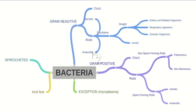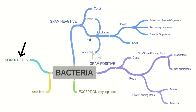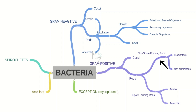Before getting into the detail of Bacillus anthracis, let me give you a quick overview of bacterial classification. Bacteria are classified into gram-negative and gram-positive based on gram staining. On the basis of acid-fast staining, those bacteria that do not stain with gram stain will stain with acid-fast. Gram-negative and gram-positive bacteria are further classified into cocci and rods, and rods are further classified into non-spore-forming and spore-forming.